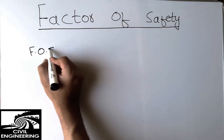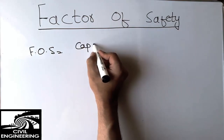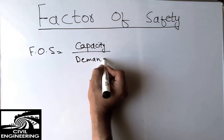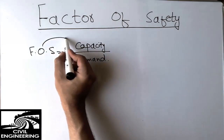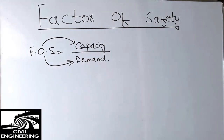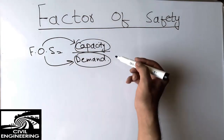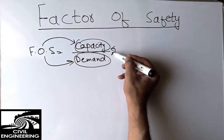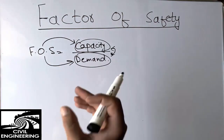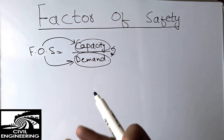The factor of safety is usually represented by FOS and it equals the capacity of the structure divided by the demand on the structure. The factor of safety is made of two major components: capacity and demand. Dividing these two terms gives us the factor of safety, which tells us how much your structure is on the safe side compared to the load.